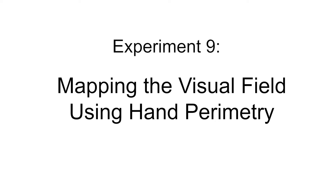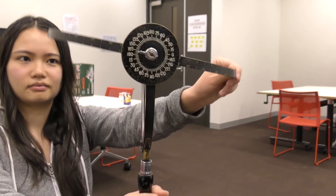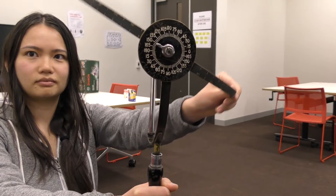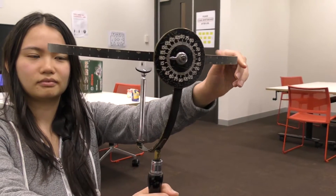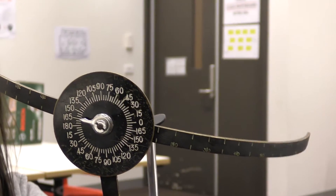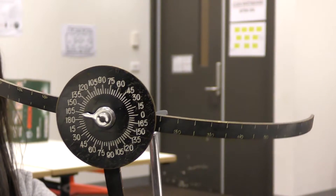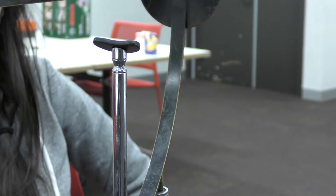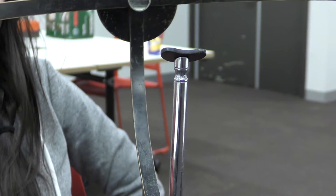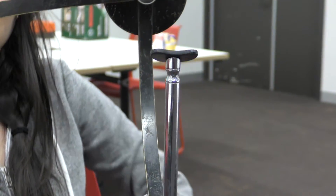In this activity, we'll be using hand perimetry in order to plot the visual field. This is the hand perimeter. You can see it consists of a crossbar which can be rotated through 360 degrees, and on the back there's an indicator rod which helps you position the apparatus in reference to your eye.